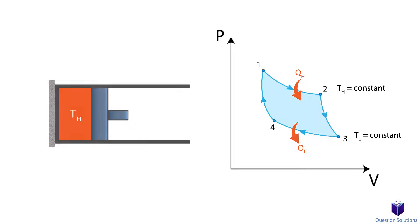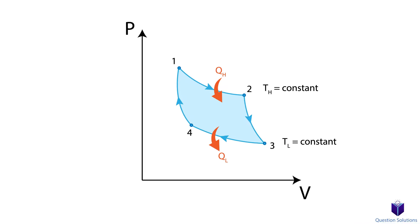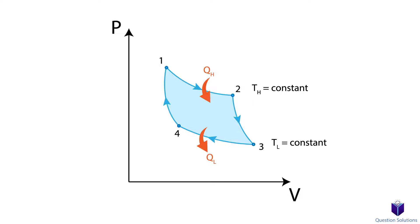Keep in mind that the Carnot heat engine cycle is a reversible cycle, so every step can be reversed, which would result in the Carnot refrigeration cycle. Here is the pressure-volume diagram for a reversed Carnot cycle. The biggest difference lies in the direction, along with QL being the heat absorbed from a low-temperature reservoir, and QH being the heat rejected to a high-temperature reservoir.